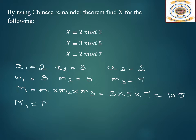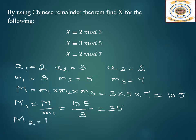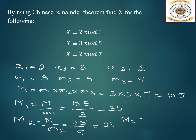Capital M1 is capital M divided by small m1, that is 105 divided by 3, which gives 35. M2 is capital M divided by small m2 — 105 divided by 5 — which equals 21. Then M3 is capital M divided by small m3 — 105 divided by 7. So we get M3 as 15. Now we are done finding capital M1, M2, and M3.